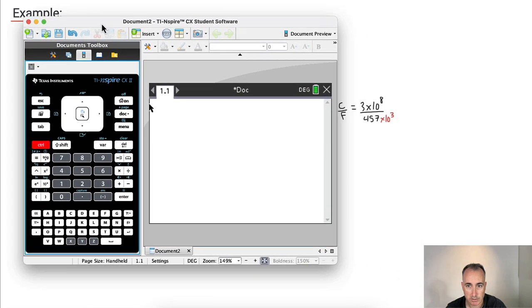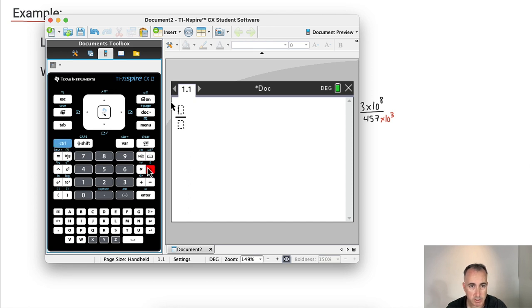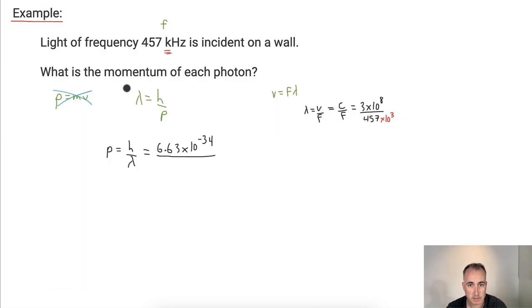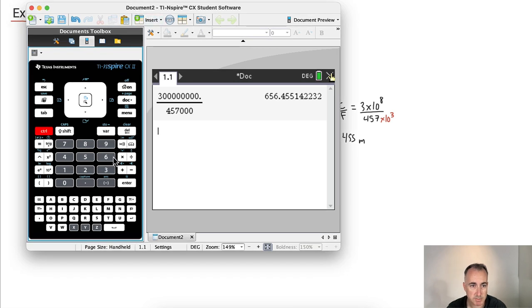Okay. So I'll find the wavelength first. So I'll do a fraction here. I'll say 3 times 10 to the 8, all that divided by 457 with three zeros. And I end up with this number here. So 656.455. Alright. So lambda is 656.455. And these would just be meters, which is actually something crazy. That's a crazy wavelength. This maybe isn't realistic at all, but we'll just put this number in. So 656.455. But keep in mind, there's lots more decimals. So remember, whenever you're doing calculations, keep all the decimals.